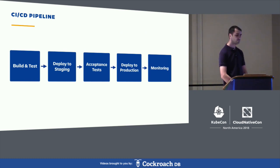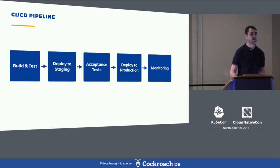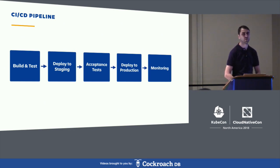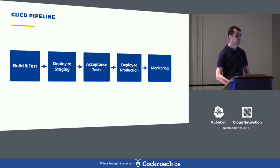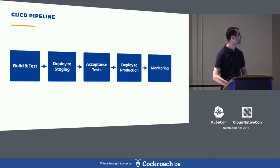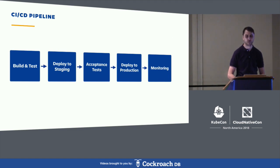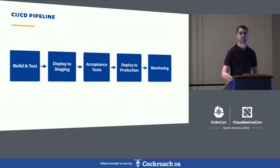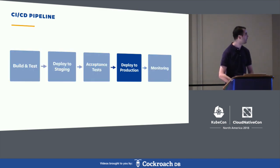A typical CI/CD pipeline has multiple stages with transitions that are either automatically or manually triggered. Normally the first stage is building an artifact and running unit tests. Then we deploy the artifact to a staging environment and run more tests. Once we're confident there is no regression, we deploy to production, and finally we keep monitoring our applications. Today I will mostly focus on the deployment to production stage.